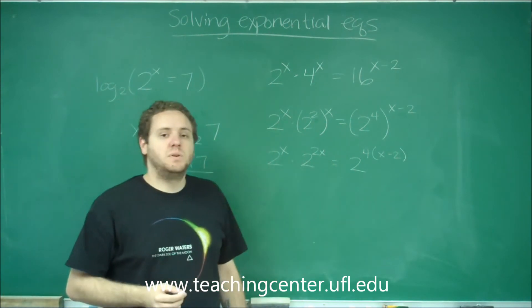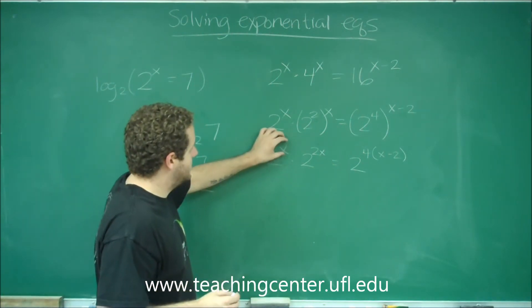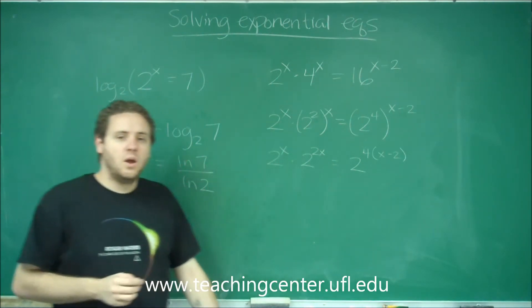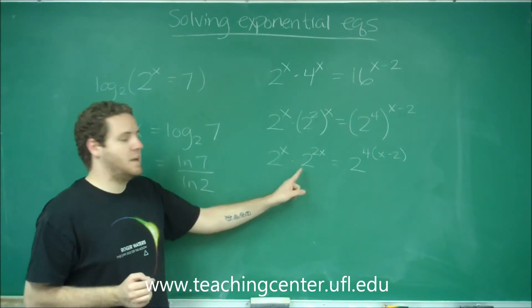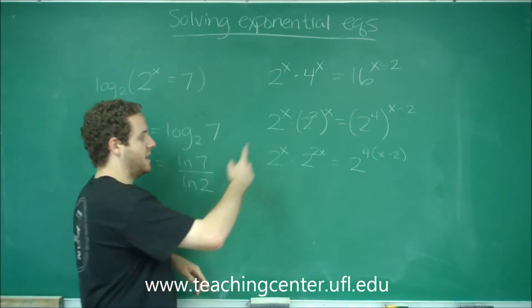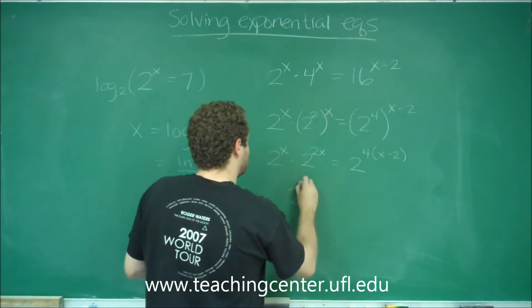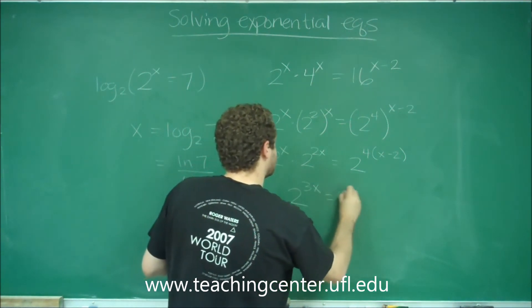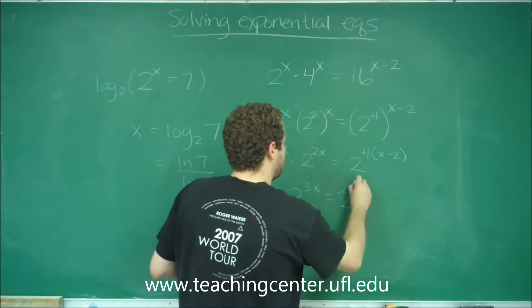Lastly, we need to get each side to be one term. Here we have 2 to some power times 2 to another power. Remember that if you multiply with the same base, you add the exponents. So x plus 2x would be 3x. And I'll distribute this before we get 4x minus 8.